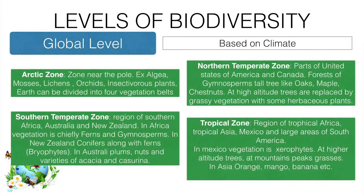Southern temperate zones include regions of Africa, Australia, and New Zealand, where the vegetation is chiefly ferns and gymnosperms. Northern temperate zones cover parts of the United States and Canada, where gymnosperms and tall trees like oak and maple are the main vegetation.